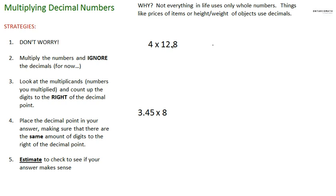Step two: multiply the numbers and ignore the decimals for now. Let's just treat this as 128 times 4. I'm gonna use the same strategies. I'm gonna put 12.8 at the top because it has more digits than the four. I'm doing 12.8 times 4, but I'm gonna ignore this decimal.